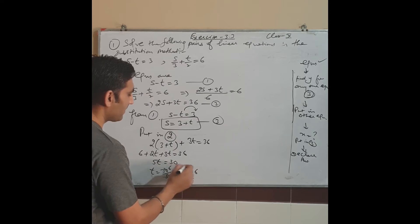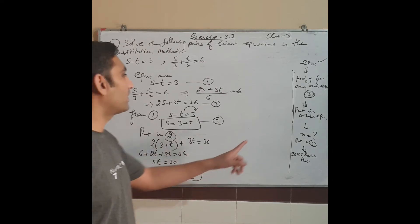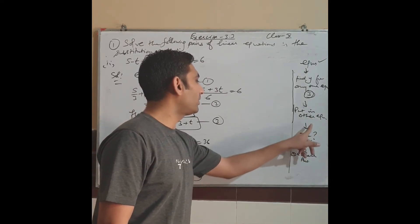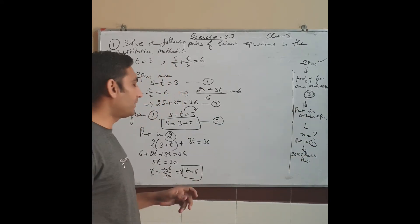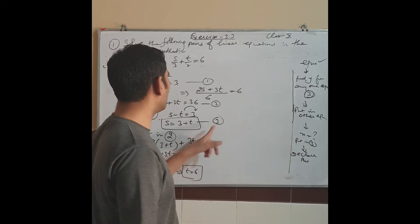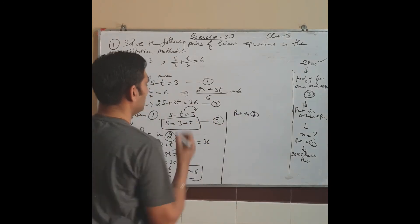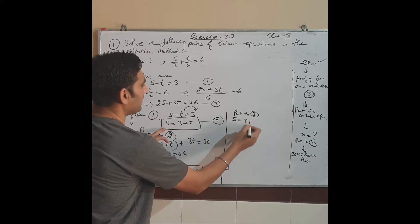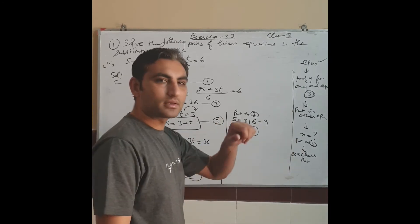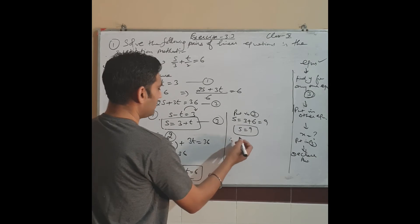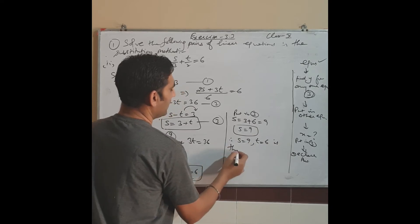We have t = 6. Now put this into equation 3: s = 3 + t = 3 + 6 = 9. So s = 9. Declare the answer: therefore s = 9 and t = 6 is the required solution.